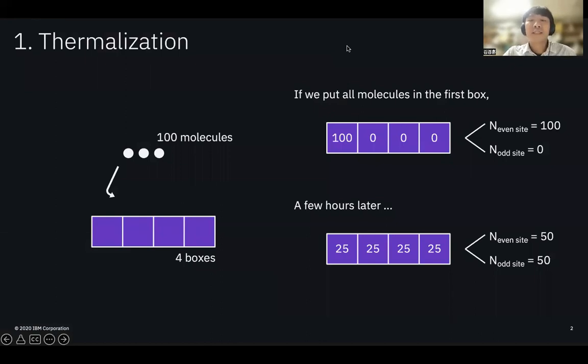Let's imagine 100 molecules and four boxes where the molecules are freely moved from one box to another. At time equals zero, suppose we put all 100 molecules in the zeroth box. A few hours later, since the molecules will diffuse, we can imagine that the molecules are separated to each box equally. This is an example of classical thermalization.